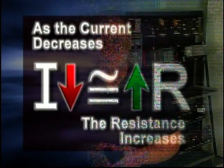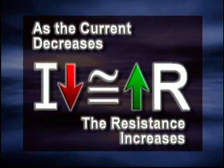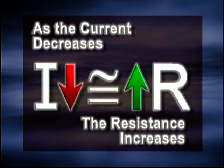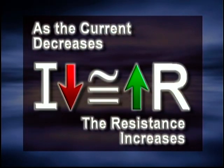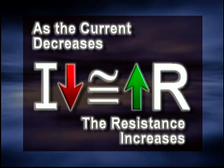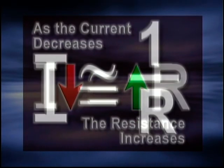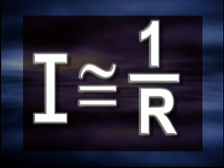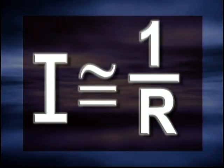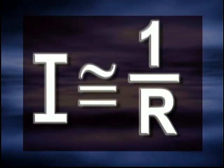Analyzing the results, we see that when resistance increases, current flow decreases. Conversely, when resistance decreases, current flow increases. This relationship is called an inverse proportion. The current is proportional to the inverse of the resistance. In symbols, the current, I, is proportional to 1 divided by resistance, R.